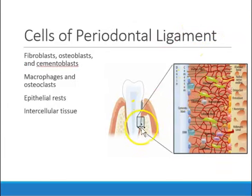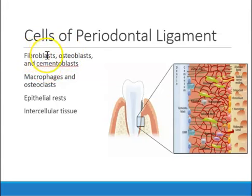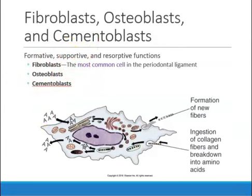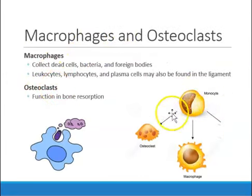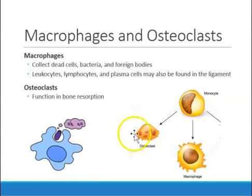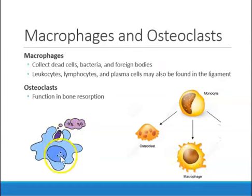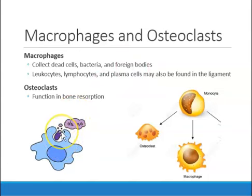Within the periodontal ligament fibers, there are fibroblasts, osteoblasts, and cementoblasts — all of which make fiber, bone, and cementum respectively. Remember, fibroblasts can also destroy fiber. We also have macrophages and osteoclasts. Monocytes, which are white blood cells, give rise to both osteoclasts and macrophages. Osteoclasts have a ruffled border to resorb bone, while macrophages act as defenders — eating bacteria, dead cells, and any foreign bodies that don't belong in the body.